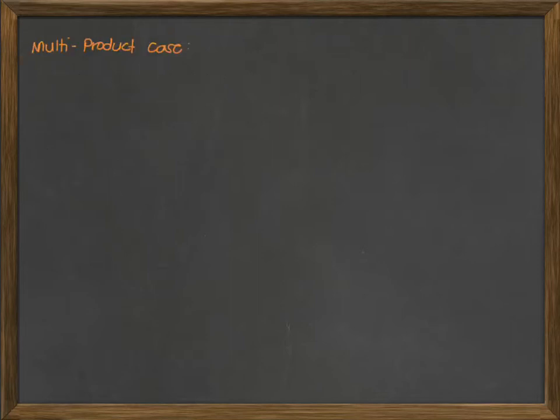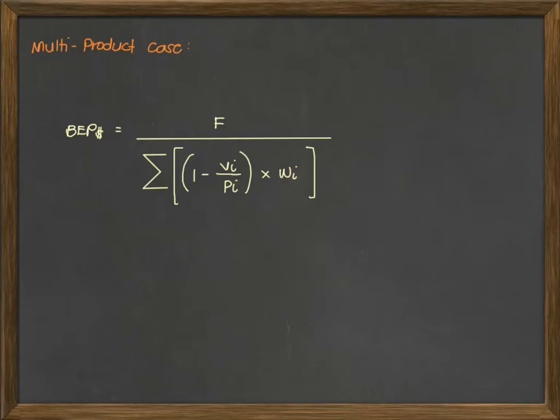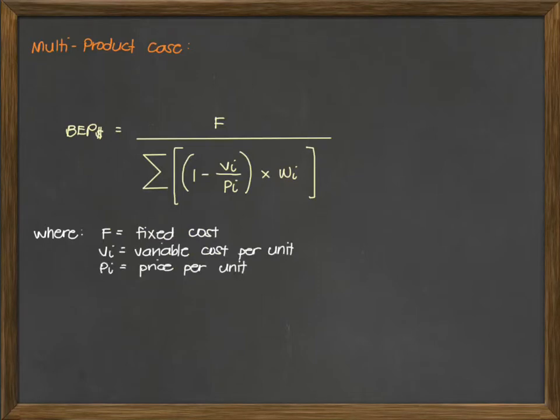In our formula, we have the break-even point in dollars represented by the following, where F is your fixed cost, V is your variable cost per unit, P is the price per unit, and W is the percent each product is of total sales. If you're looking at this formula, this is familiar with us. We only added one factor, which is W.